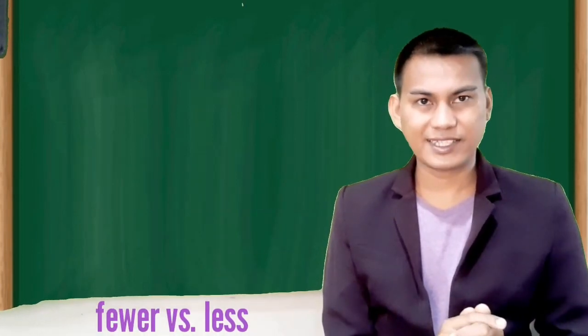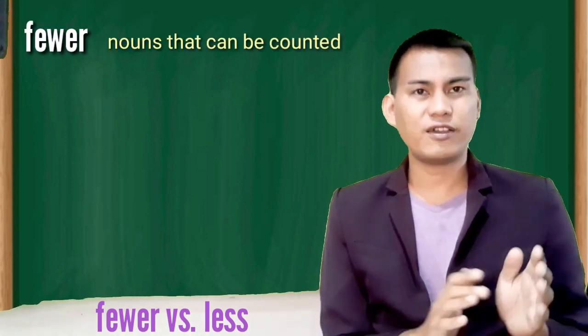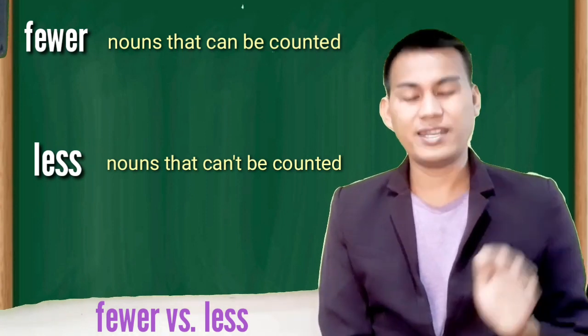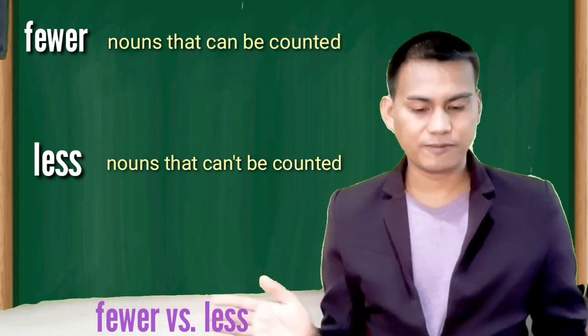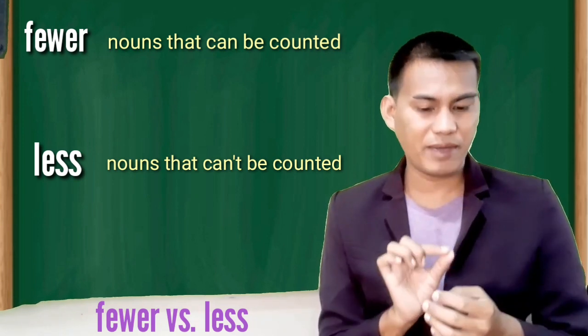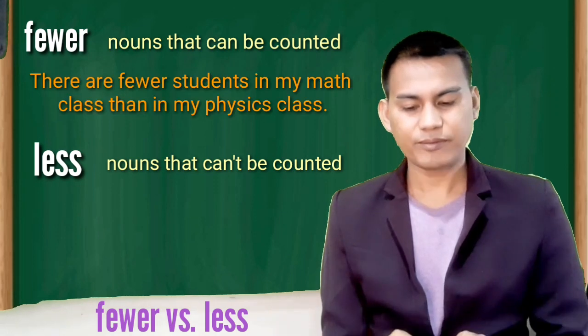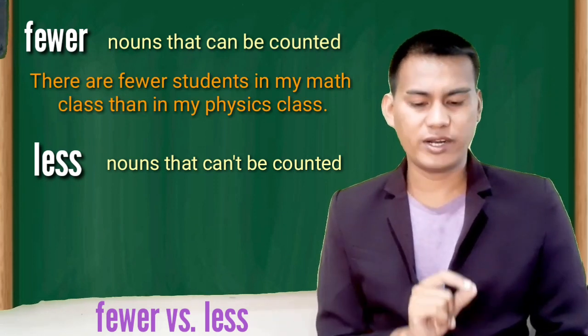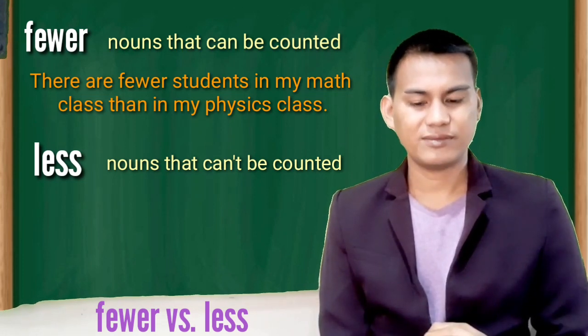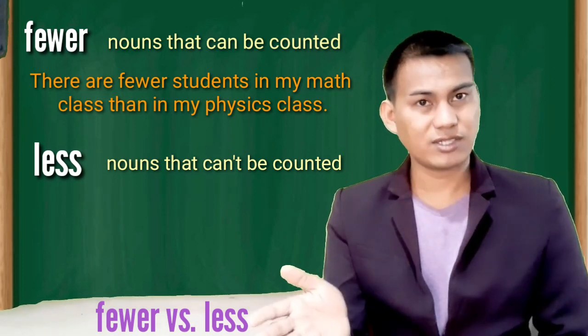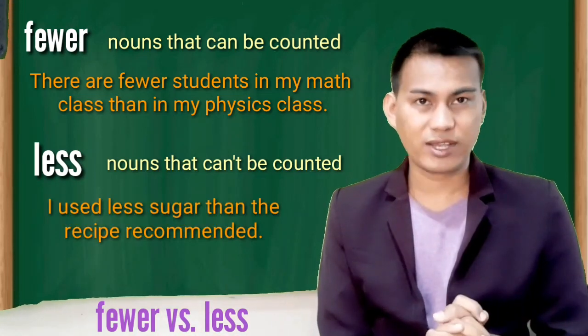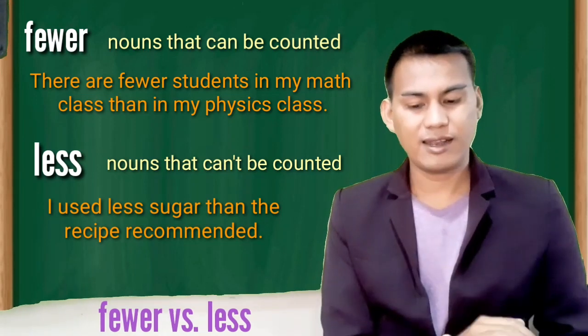Let's talk about fewer versus less. Use fewer with nouns that can be counted. Use less with nouns that can't be counted. Less may also be used with numbers that are considered as a single amount or single quantities. There are fewer students in my math class than in my physics class. You can count your students, so you use fewer. I used less sugar than the recipe recommended. Since you cannot count sugar, so you use less.